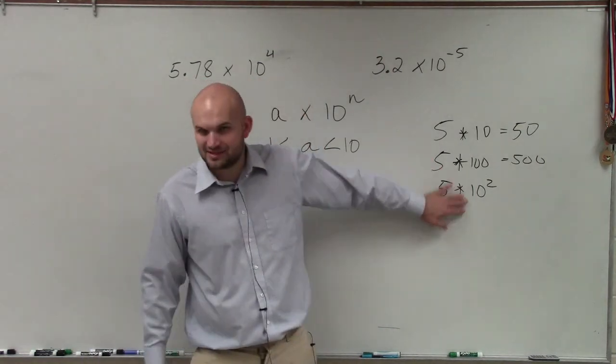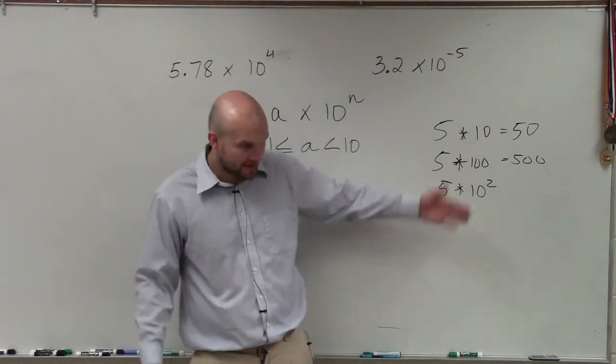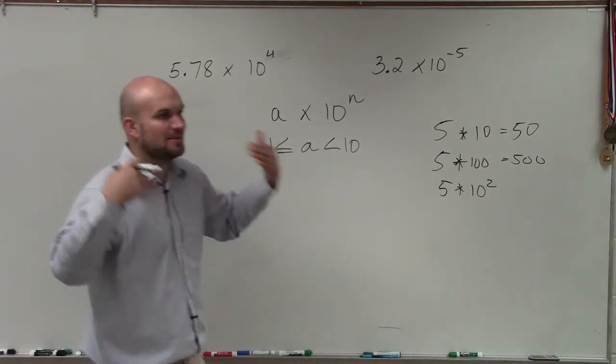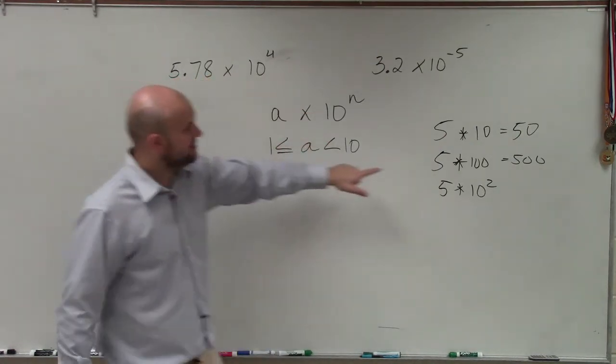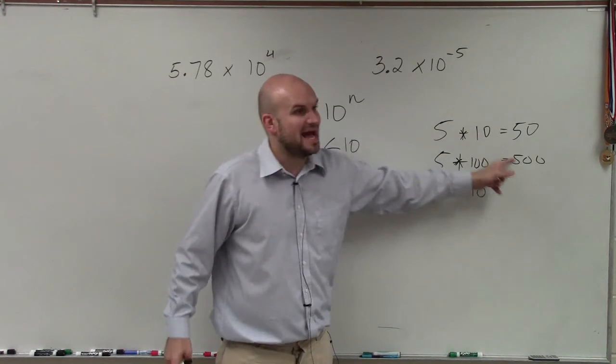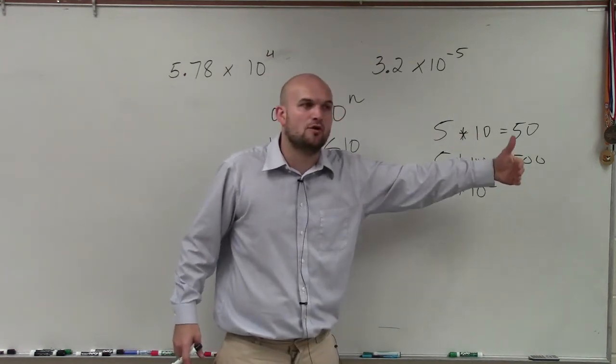So do you guys understand how this is the exact same thing? OK. So basically, just a way to think about this, ladies and gentlemen, is when I am multiplying by 10, I'm just adding zeros. I'm moving the place value over to the right.